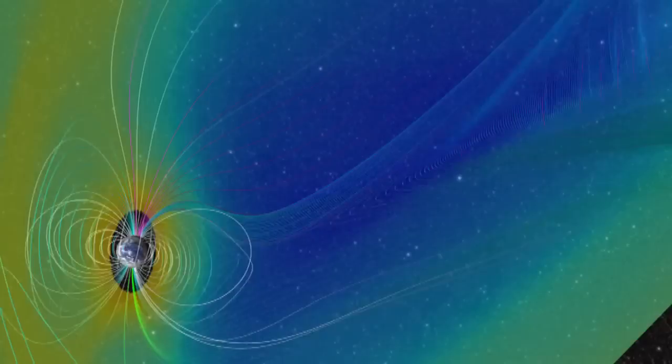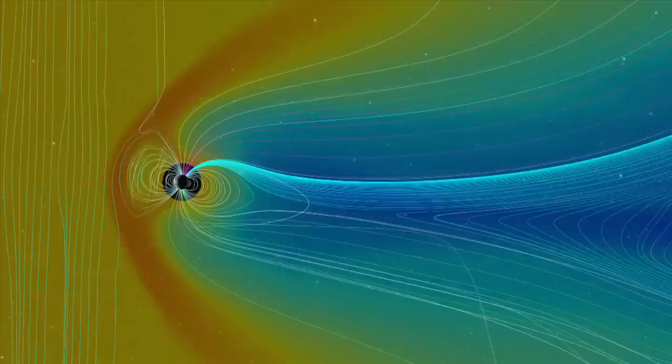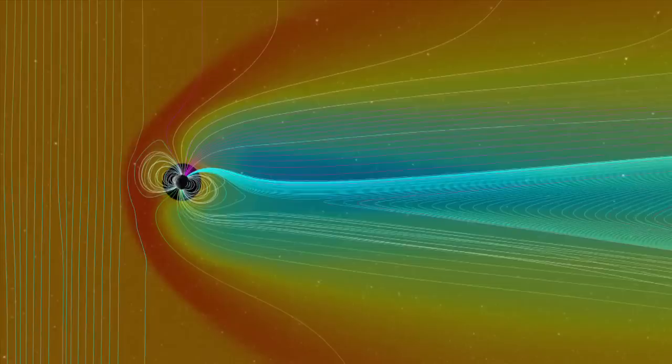But a coronal mass ejection, or CME, can change things. The higher-density plasma, and stronger magnetic field carried within the CME, strikes Earth's field and significantly alters the structure.